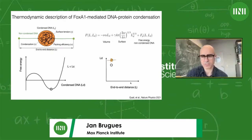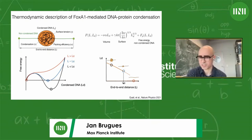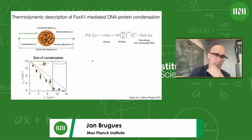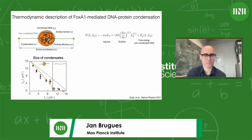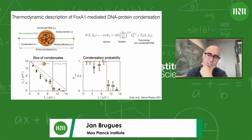The minimum gives the amount of DNA in the droplet as a function of end-to-end distance. Increasing end-to-end distance — equivalent to increasing tension — shifts the minimum, and at some point the energy of making a condensate exceeds that of not making one. This is a first-order transition: condensate size decreases and then disappears abruptly. We measured this — condensate size decreases with end-to-end distance and eventually vanishes, consistent with the thermodynamic description.